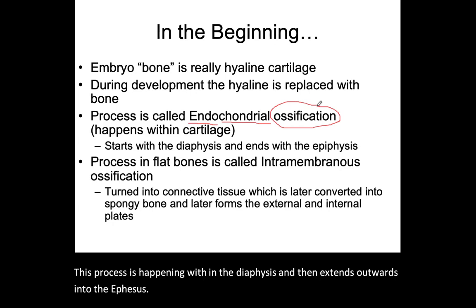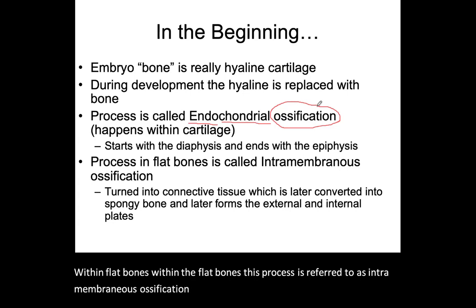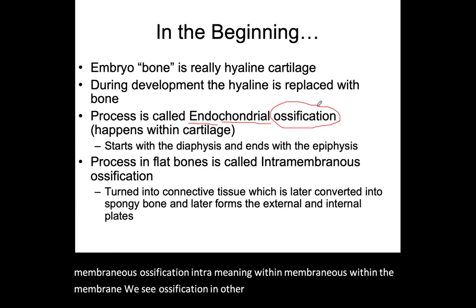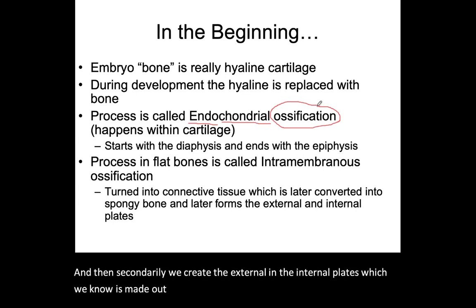Within flat bones, this process is referred to as intramembranous ossification — within the membrane, we see ossification. We create the spongy bone first, and then secondarily we create the external and internal plates, which are made out of compact bone. That is a process that happens later on during development.